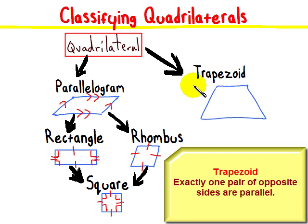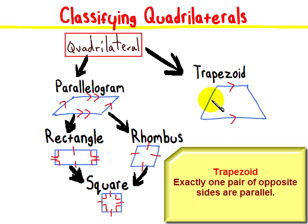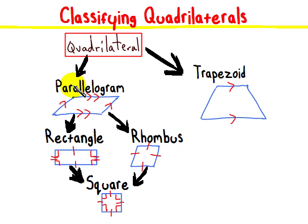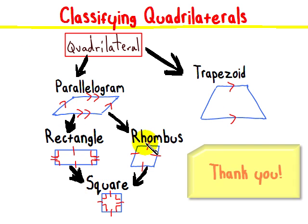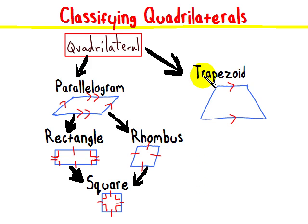Over here, we have trapezoids. Trapezoids are when you have exactly and only one pair of opposite sides which are parallel. So that side is parallel to that side, but these sides are not parallel. So there you go — parallelogram, rectangle, square, rhombus, and trapezoid. Thank you.